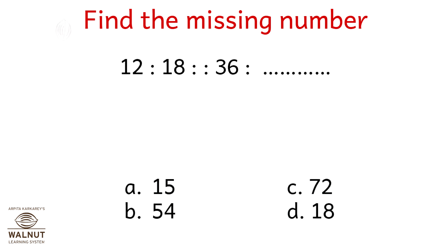Find the missing number here. 12 is to 18 as 36 is to what? We see that 6 into 2 is 12 and 6 into 3 is 18. What into 2 is 36? It is 18. So 18 into 2 is 36, similarly 18 into 3 is 54. That is our answer, option b.